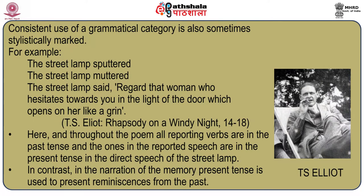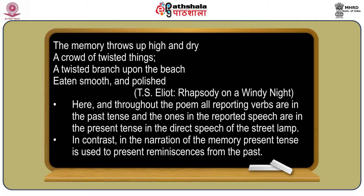In contrast, in the narration of the memory, present tense is used to present reminiscences of the past. For example: 'The memory throws up high and dry a crowd of twisted things, a twisted branch upon the beach, eaten smooth and polished.' Here the narration is in the present tense — the verb 'throws' — which reveals things related to the past: twisted things, twisted branch, eaten smooth, polished. The contrast in the use of verb forms for the direct speech and the narration functions to express that in the light of the lamp, one finds symptoms of the present in the past, while in the memory, the past lurks in the present. The whole poem is structured on this contrast.